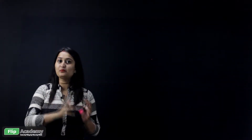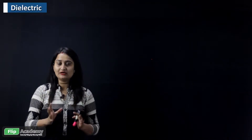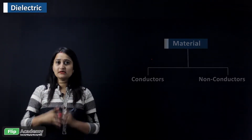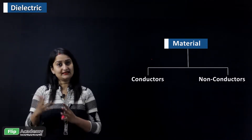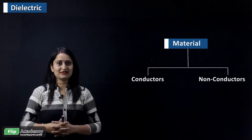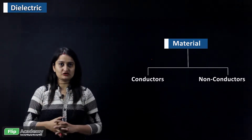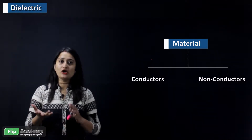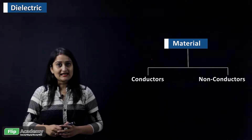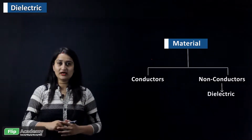Let's start with the important topic of dielectric and polarization. This topic is very important to understand capacitors — the base for a capacitor is the dielectric. Now, as materials are classified into two types — conductors and non-conductors — we must ask: where does the dielectric fall? The dielectric is basically an insulator.